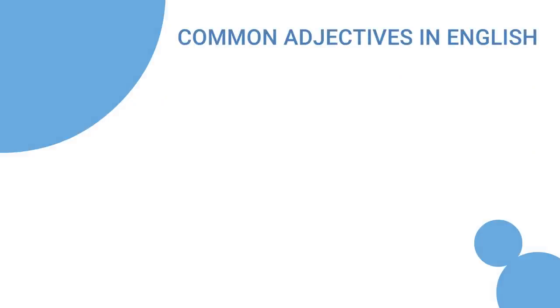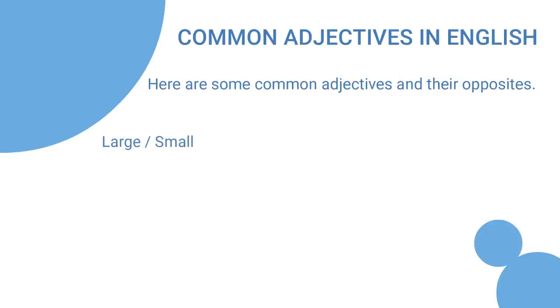Common adjectives in English. Here are some common adjectives and their opposites: large, small, happy, sad, old, new, good, bad, healthy, sick, clean, dirty.